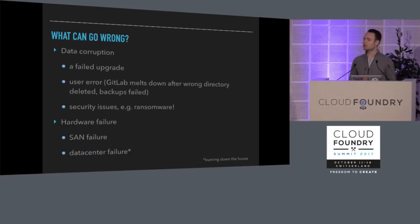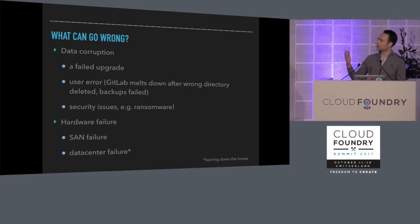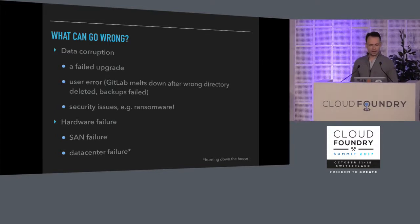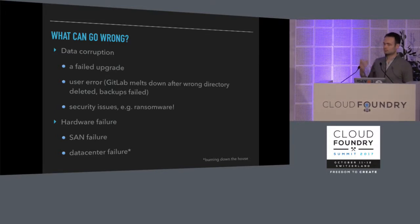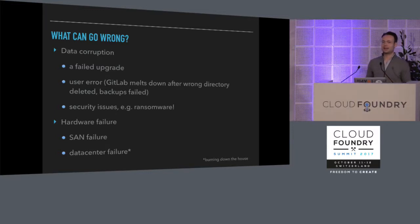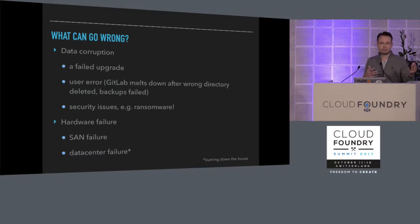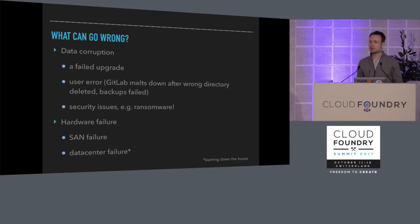So what kind of things can go wrong with Cloud Foundry? The first set of issues are data corruption problems where you might want to roll back. That might be a failed upgrade of your Cloud Foundry deployment, user error — like a few months ago a GitLab sysadmin dropped the wrong database and found the backups were all empty — or security issues. More and more we're seeing ransomware as an attack vector, and the easiest way to get back from a ransomware attack is simply to repave your entire deployment and roll back using a backup.